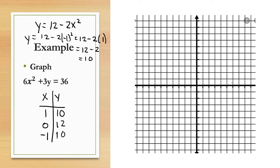Now I'll go to the graph and plot the points: (1, 10), (0, 12), and (-1, 10). Remember that the highest power in the equation is 2, so the graph will be a parabola — a U-shape. In this case it's turned upside down, but I can see that U-shape, and that helps draw it more efficiently. And so we now have the graph of 6x² + 3y = 36.